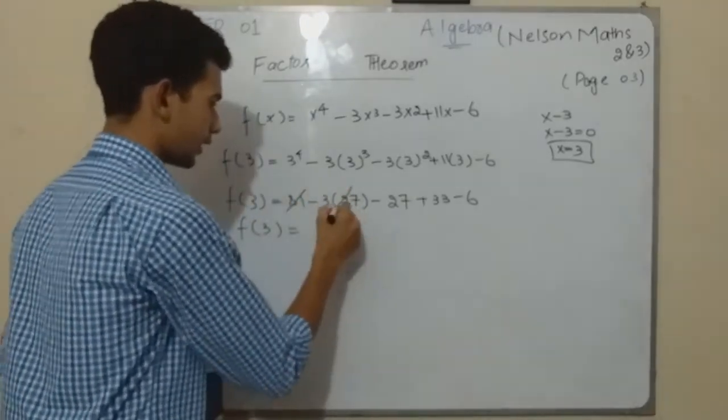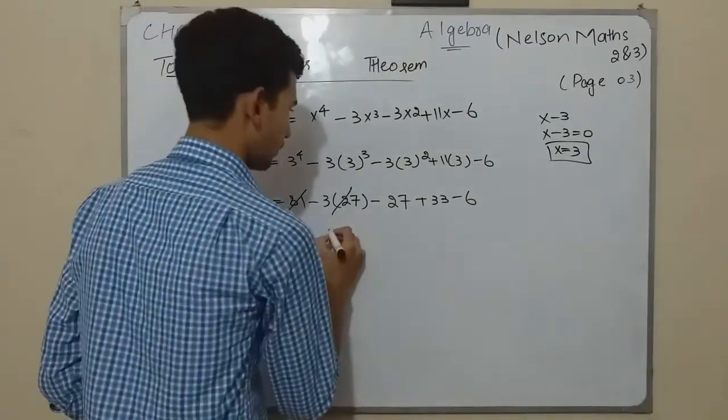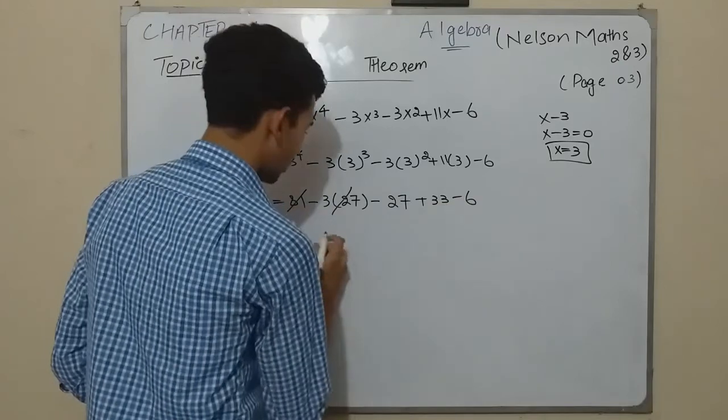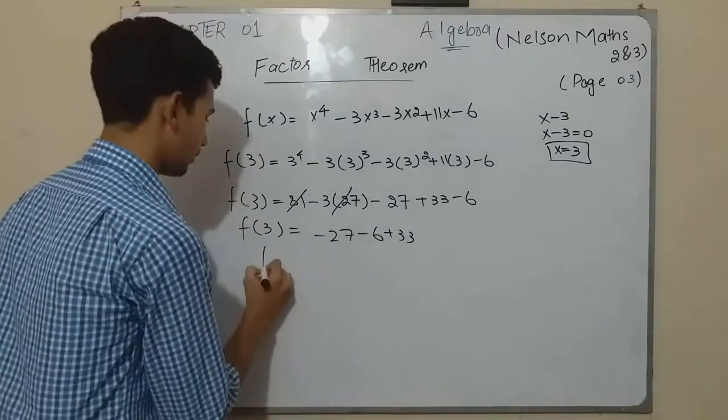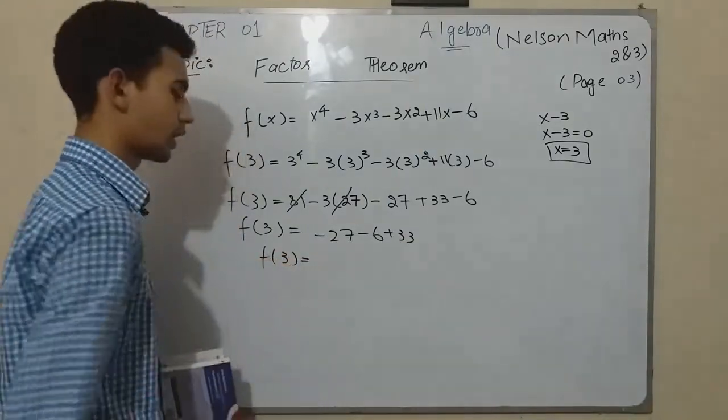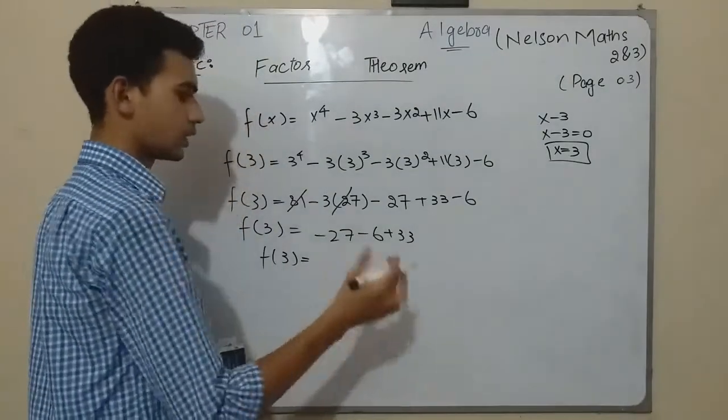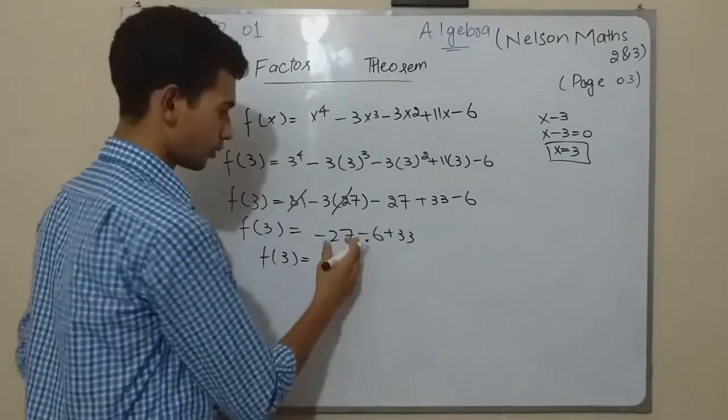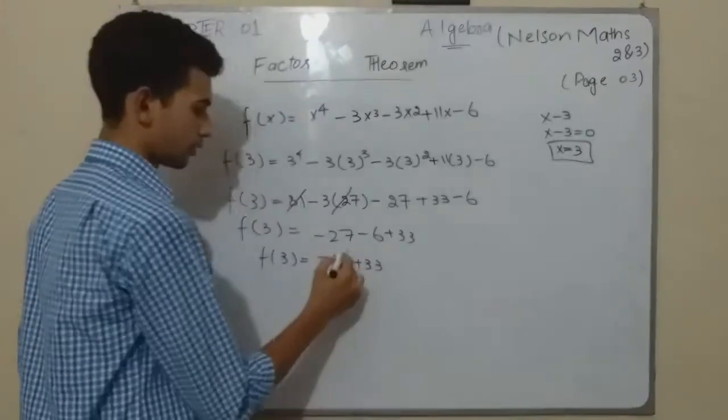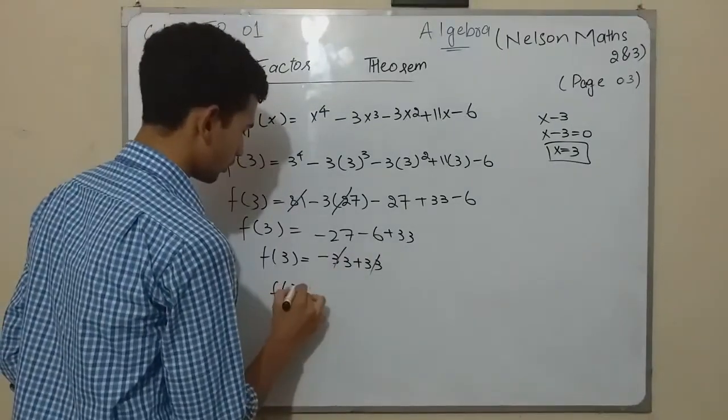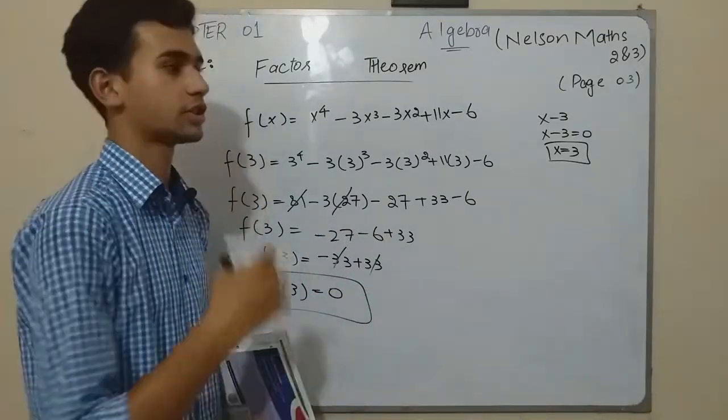This and this cancelled each other because this is a positive 81 and this is a minus 81. So now -27 plus negative, negative makes positive. It means we are going to add up but the sign should be of the greater number. It means the greater value which is in the negative. So -33 plus 33, plus 33 plus 33. I'm going to cancel them out.